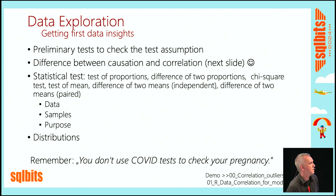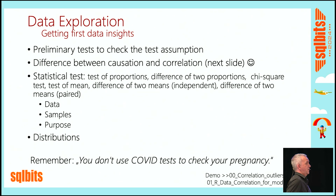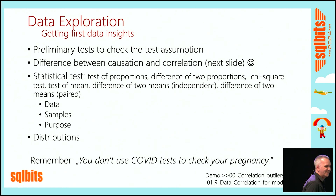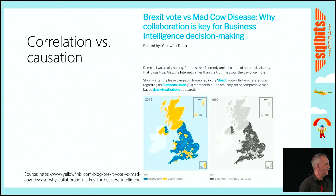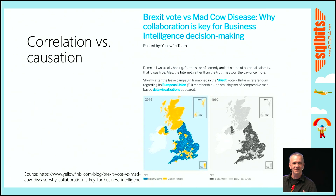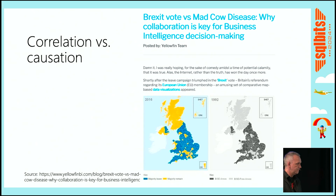The second area is data exploration. There are quite a lot of preliminary tests that can check different assumptions, correlations, and statistical tests. Does anybody know the difference between correlation and causation? The next slide has a nice example — Brexit and Mad Cow disease. By the way, this was later debunked. But I like it as a concept for illustrating the difference between causation and correlation.